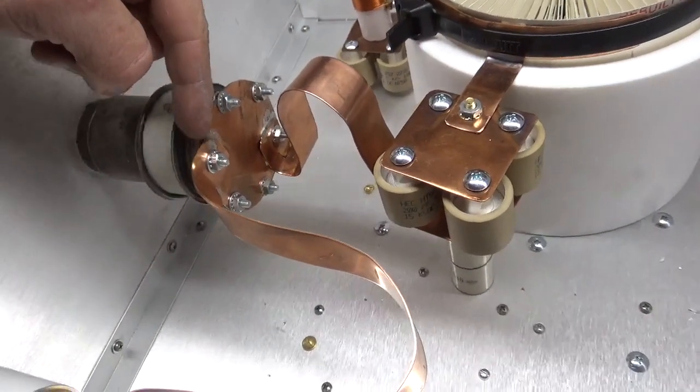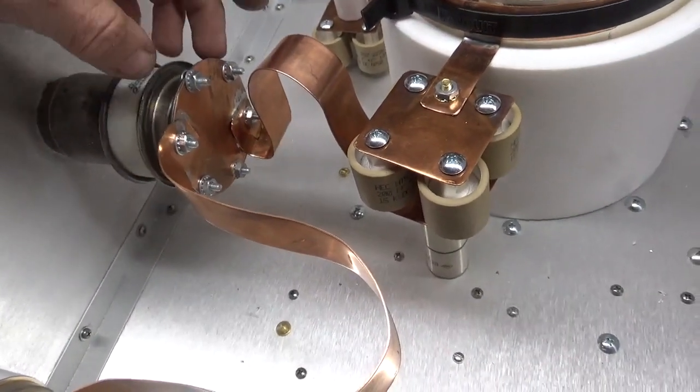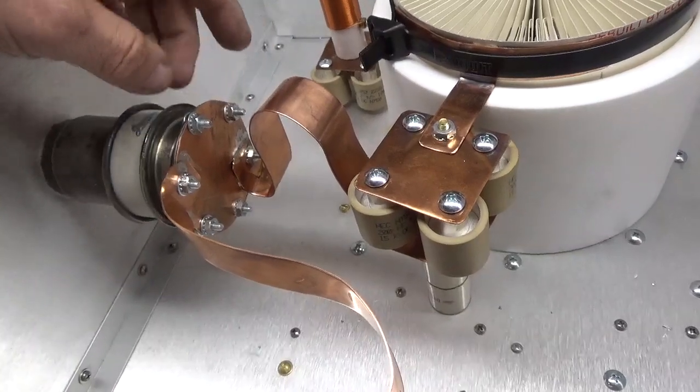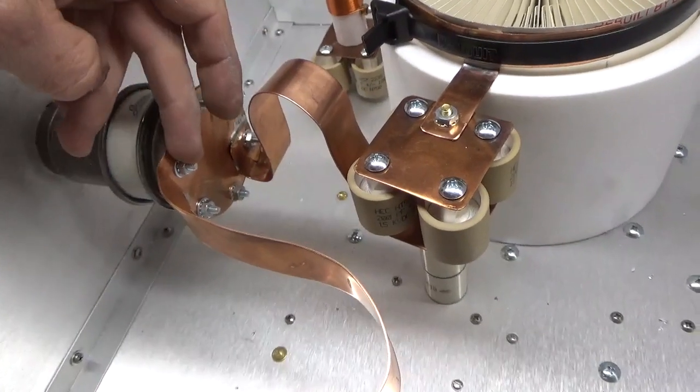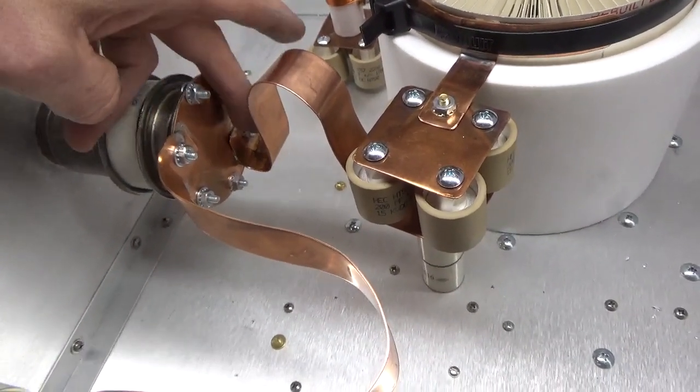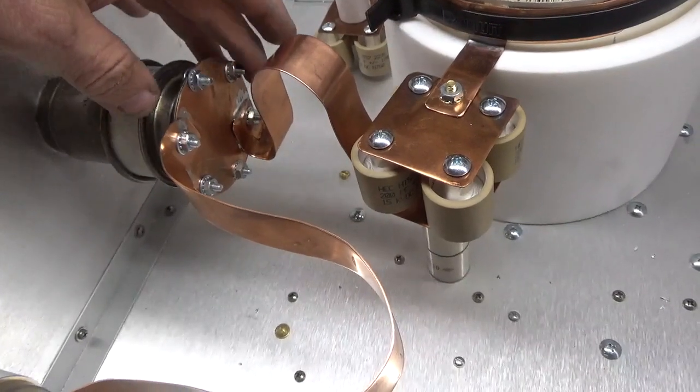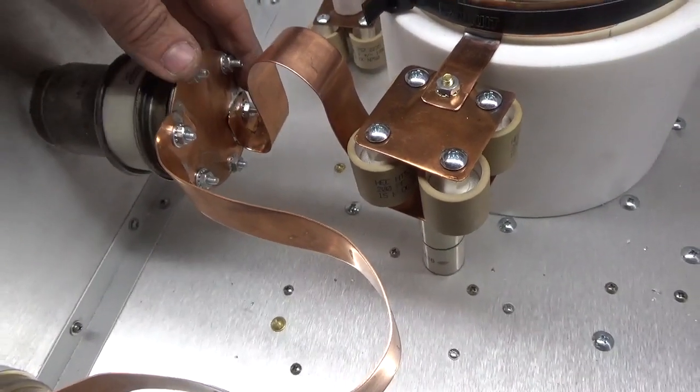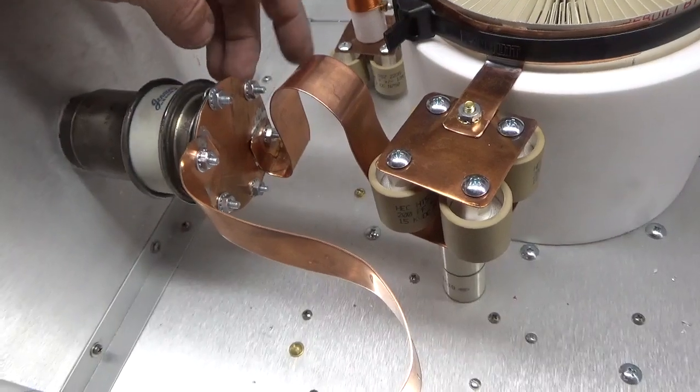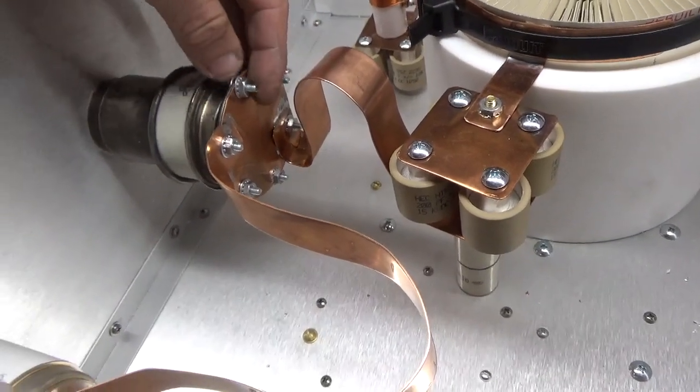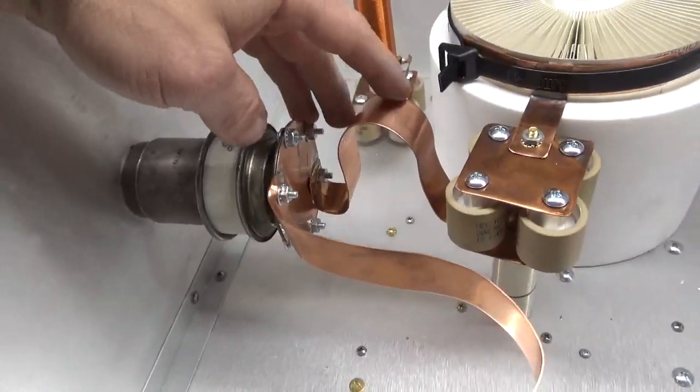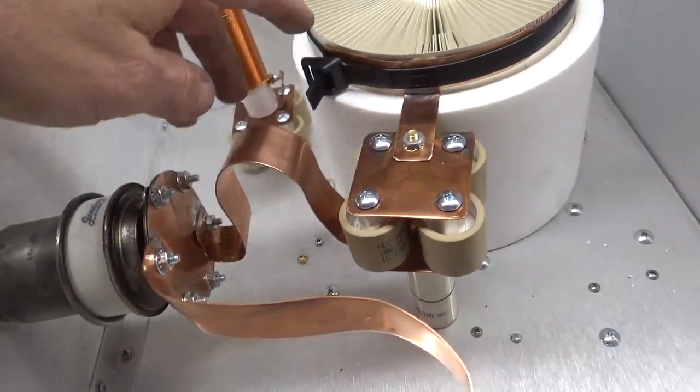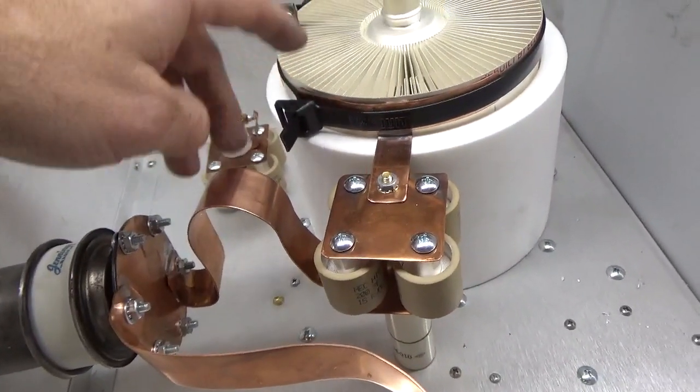Like I said, I soldered the straps to the plate. The plate wasn't touching the capacitor when I did that. It was pulled away. Put a screw through. Soldered it. Put a screw through. Soldered it. Took all the screws out. Put the plate up against the capacitor. Put all the screws through. Put the cup nuts. Everything is real tight. Washer on both sides.